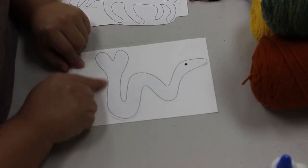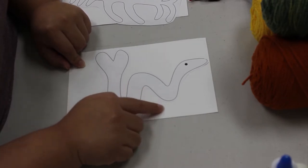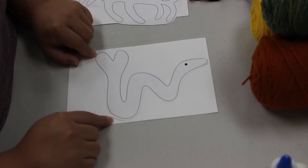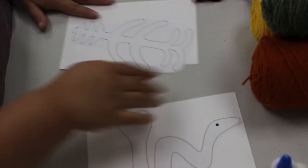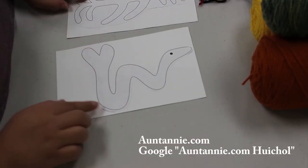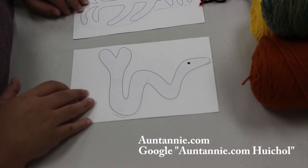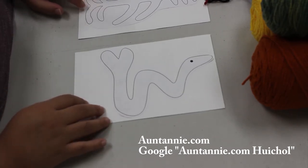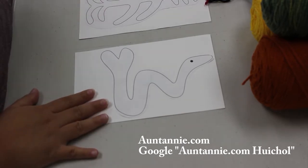It's okay that I just cut around the image and wasn't precisely cutting along the line. This will all be covered by yarn. These templates can be found on Aunt Annie.com. You can just Google Aunt Annie.com and Weechul yarn art to find the templates there.